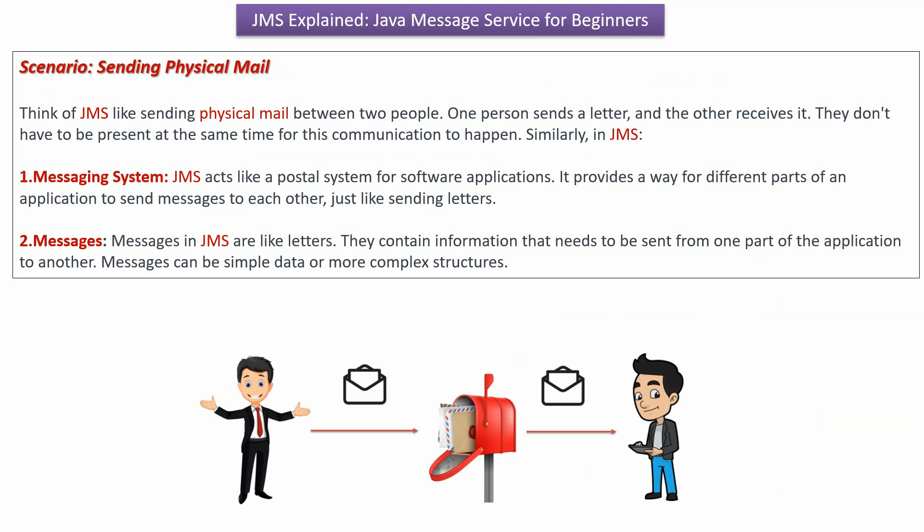Messaging system: JMS acts as a postal system for software applications, providing a way for different parts of an application to send messages to each other just like sending letters. Messages in JMS are like letters — they contain information that needs to be sent from one part of the application to another.